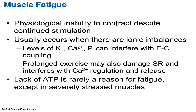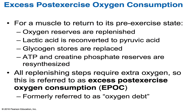Muscle fatigue is a physiological inability for muscles to contract despite continued stimulation. This usually occurs when there's an ionic imbalance of potassium, calcium, or phosphorus, causing interference with EC coupling. Prolonged exercise can also damage the sarcoplasmic reticulum and interfere with calcium regulation and release. Lack of ATP is rarely a reason for fatigue, except in severely stressed muscles. For muscles to return to their pre-exercise state, oxygen reserves need to be replenished, lactic acid must be reconverted to pyruvic acid, glycogen stores need replenishing, and ATP and creatine phosphate reserves need to be resynthesized. All these steps require extra oxygen — this is referred to as excess post-exercise oxygen consumption, or EPOC, formerly called oxygen debt.